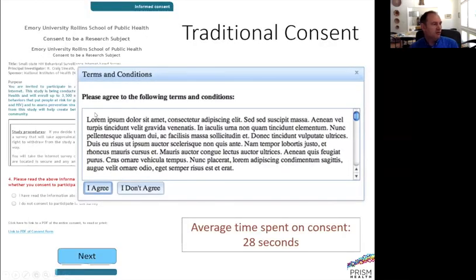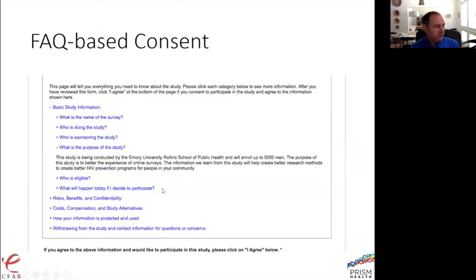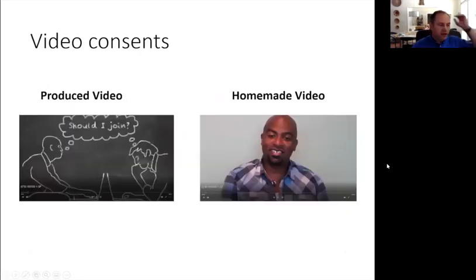For this study we had four different ways of providing consent. One was the traditional consent with the long scroll document. The second was an FAQ-based consent — instead of the whole document, you could click topics like 'what's the purpose?' and a short statement would open. The whole consent form is organized this way and people can look at what they're interested in. Then we had two video-based formats.